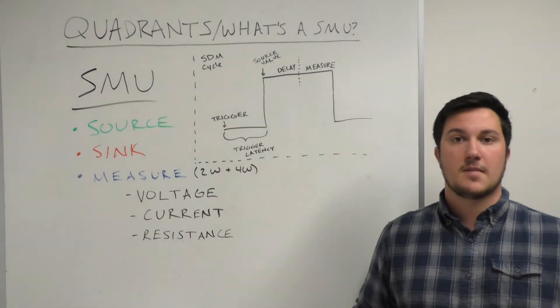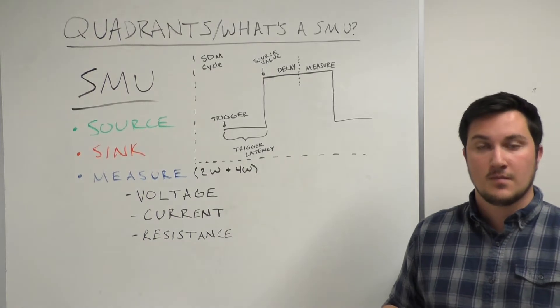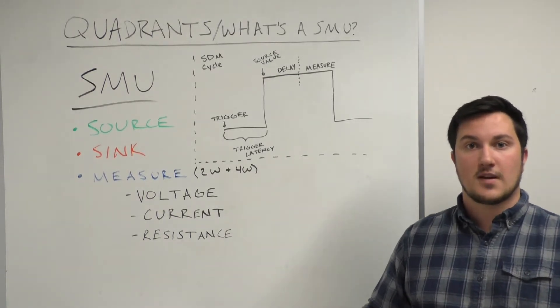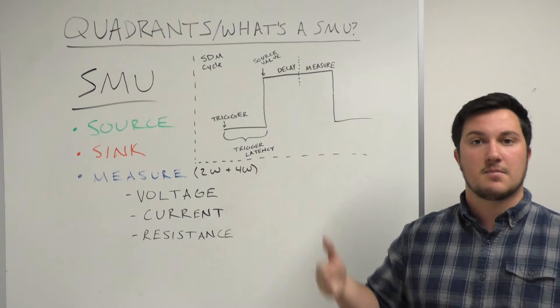You have two basic methods of operation when using an SMU. The first, you'll be supplying a constant source value, either voltage or current, and making periodic measurements.